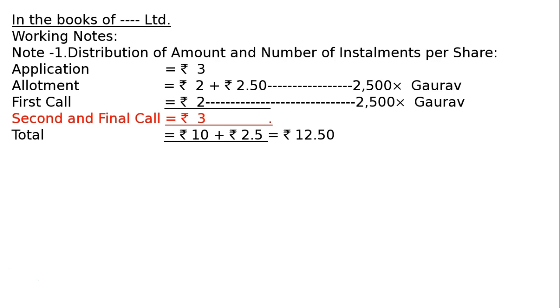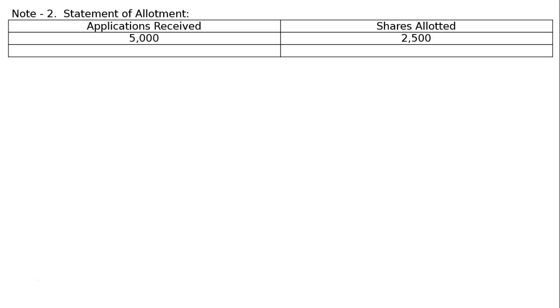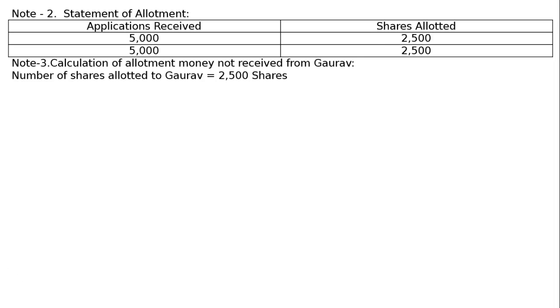Now we calculate the amount due on allotment and not paid by Gaurav. Working Note 2 — Statement of allotment: Applications received 5000 shares, shares allotted 2500. Total applications received: Rs. 5000; shares allotted: 2500.